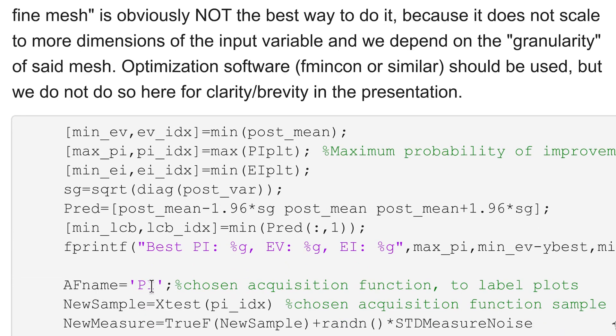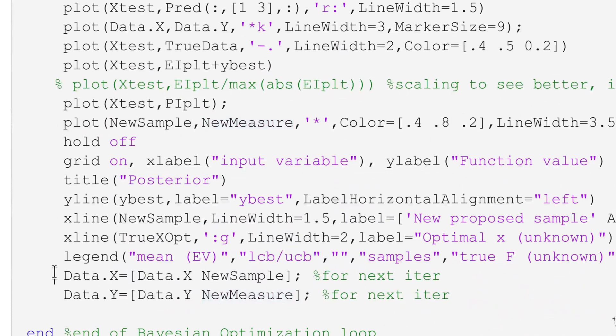So once I get this probability of improvement best sample then this will be the new sample. The new measurement will be the true function plus the measurement noise. And once we have that new sample and new measurement we will add them to the historical sample record for next iteration and compute posterior and acquisition functions and so on.